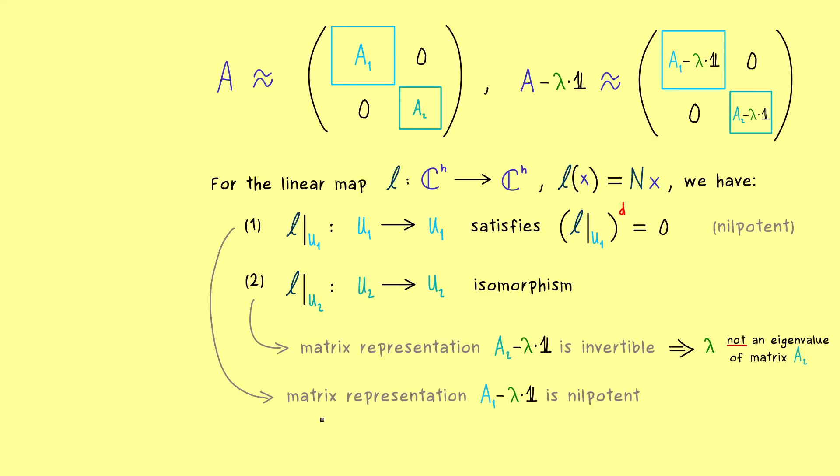So in conclusion, the matrix representation given as A1 minus lambda identity has to be a nilpotent matrix as well. Hence if we have this matrix to the power d, we get out the zero matrix.